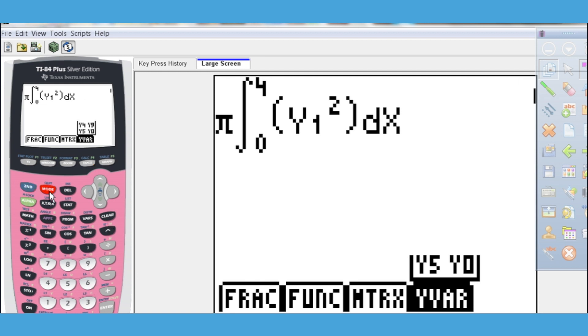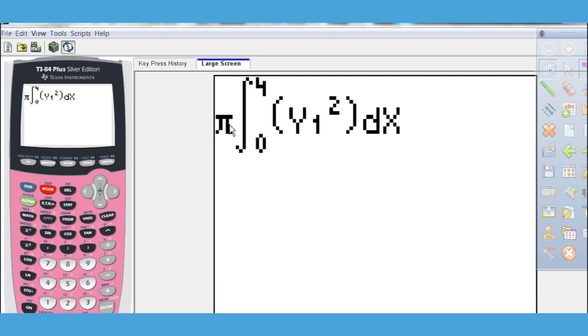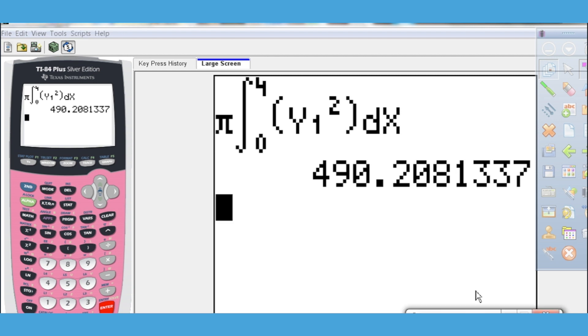And then I need to do this with respect to x. If you need to see the buttons I'm pushing, they turn red when I hit them on here. If you need the y1, there's a shortcut. Alpha trace gives you all of your y variables if you ever want to do that. So now I have put in my calculator what I wrote down that I wanted to do. And so now when I hit enter, it should give me the value. So 490.208 is my volume of that solid. So that is the answer, 490.208.